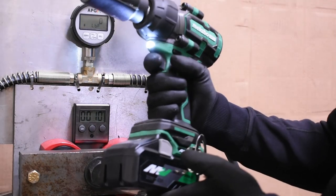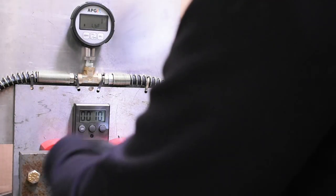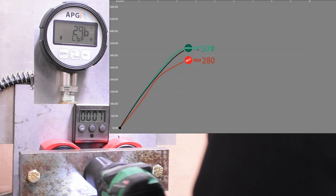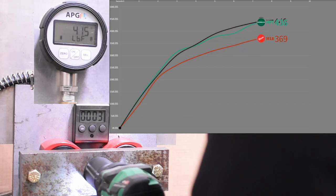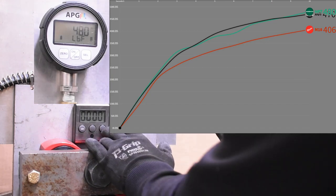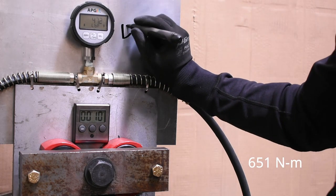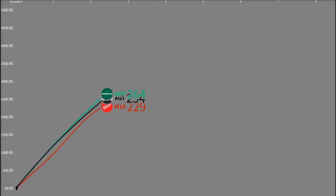Here's that Metabo HPT. 480. I'd say so. Somehow, so far, keeping up, and then some, with the much more pricey XGT Makita, and maintaining its advantage over that Milwaukee. Impressive stuff.